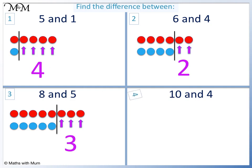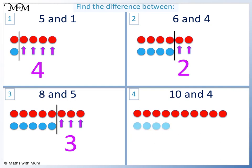Question 4. Here is 10 and here is 4. Counting on, we have 1 2 3 4 5 6. The difference is 6.